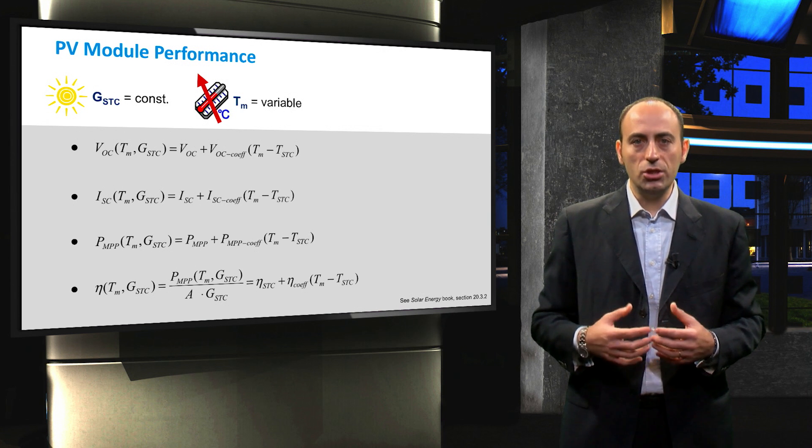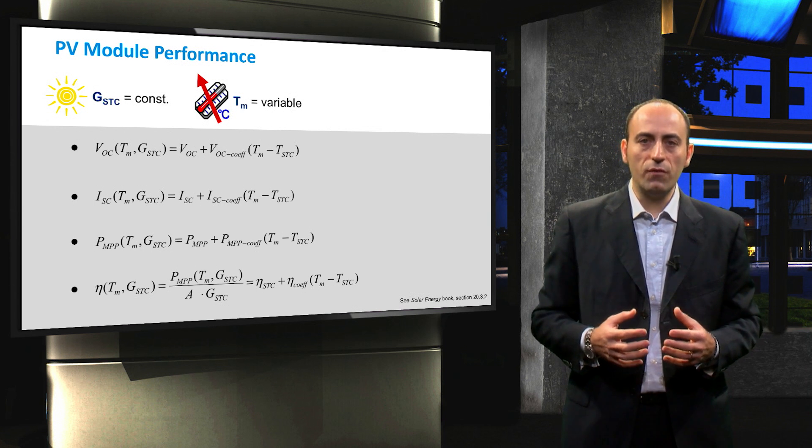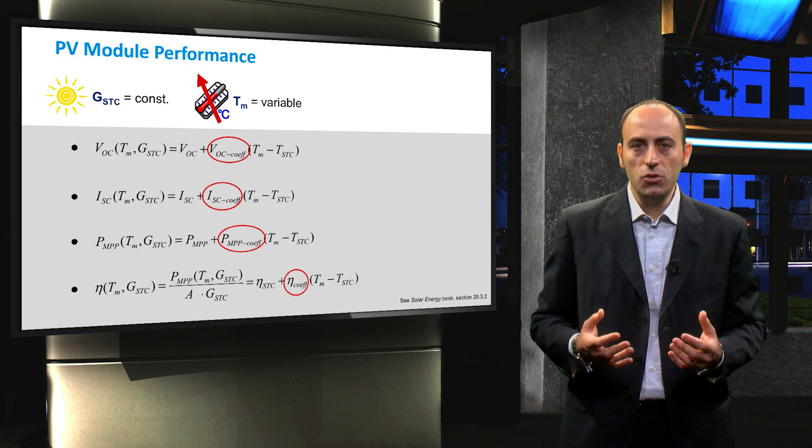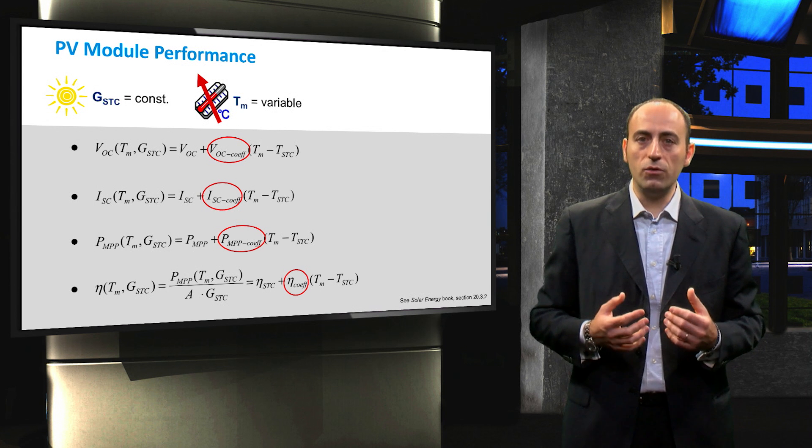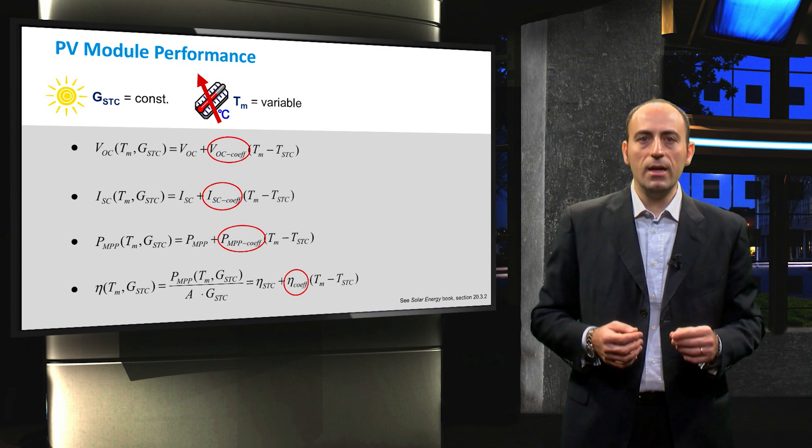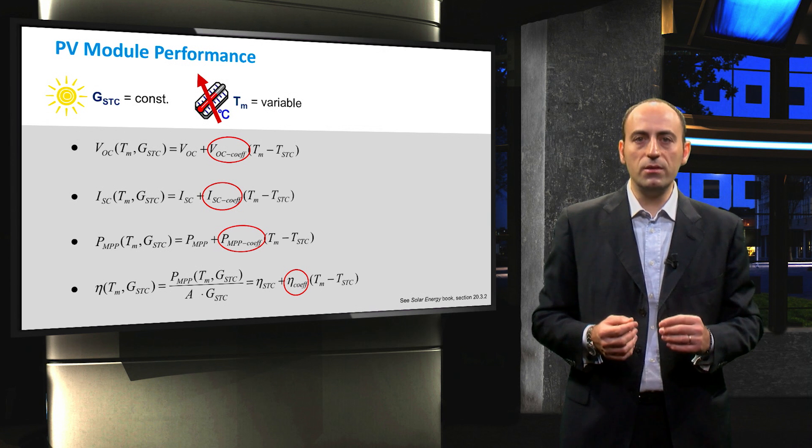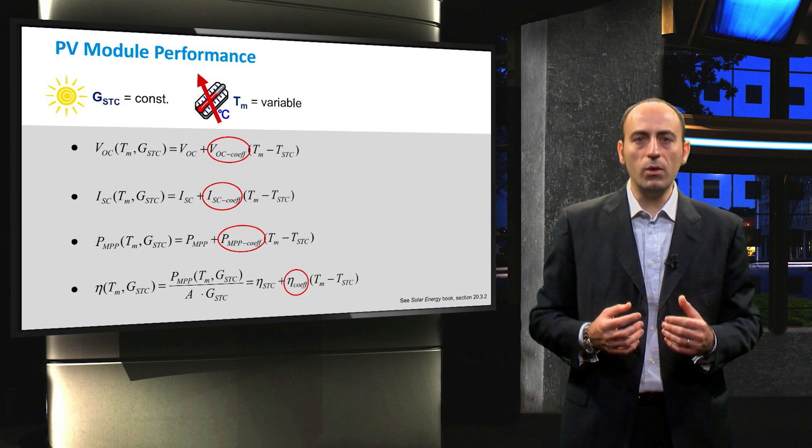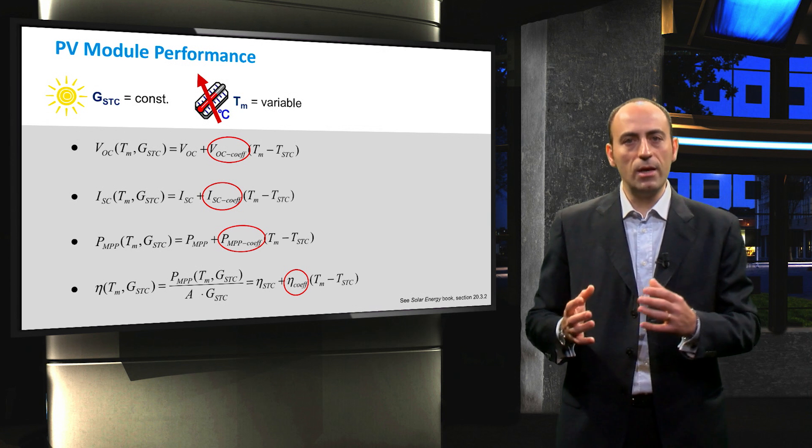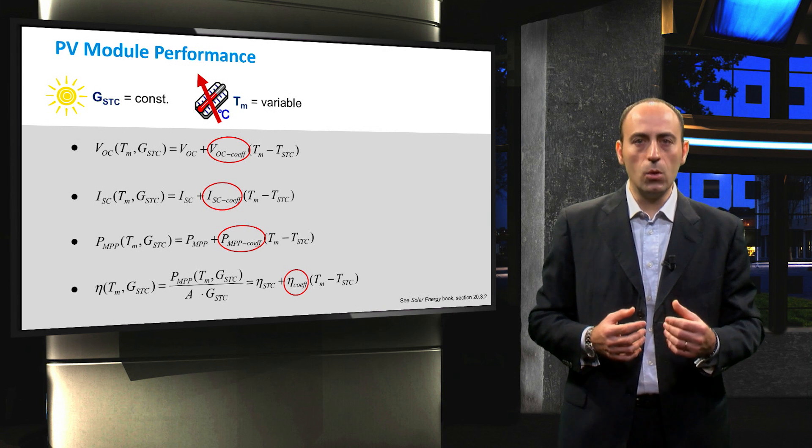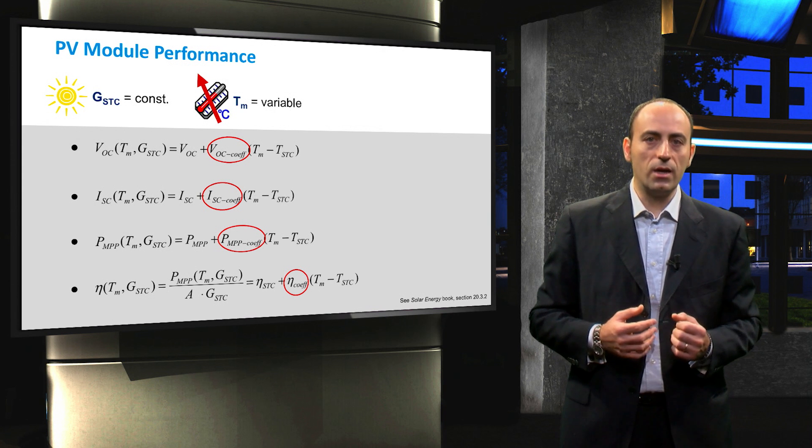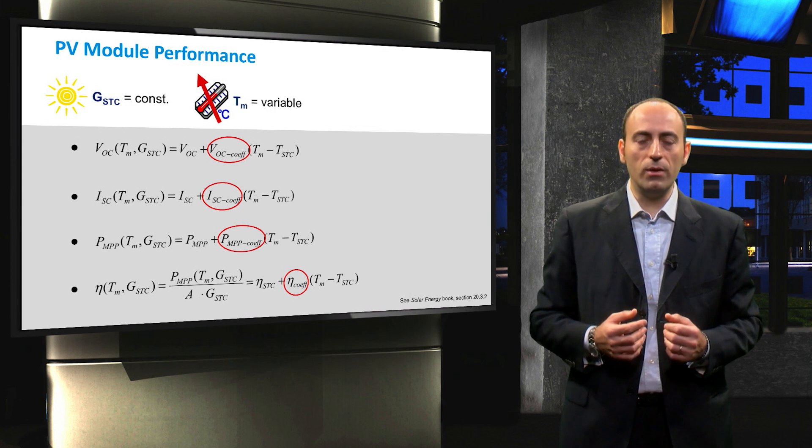Usually, in the datasheet of the PV module, the temperature coefficients are provided by the manufacturers. So, assuming that we know the temperature of the module at a certain moment, then the VOC, for example, is re-evaluated from the VOC at standard test conditions by means of a simple linear correlation where the temperature coefficient indicates the slope of the deviation. The same applies also for the short circuit current and the maximum power point and the efficiency.